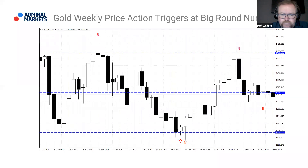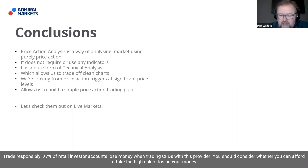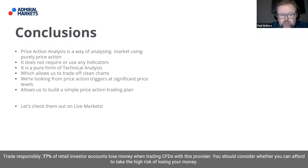To conclude: price action is just a simple way of analyzing markets using purely price action. It doesn't require or use any indicators. Some people might add a couple of moving averages or one or two indicators — personally I say to begin with, if you're struggling, strip it all back and then add as you see fit. Some may need one or two indicators; others might be very happy just to trade with simple price action because it is a pure form of technical analysis. It allows you to trade off clean charts, looking for price action triggers at significant price levels. That's the base of a trade plan — and that's what we've been here to do today: build a simple price action trading plan.